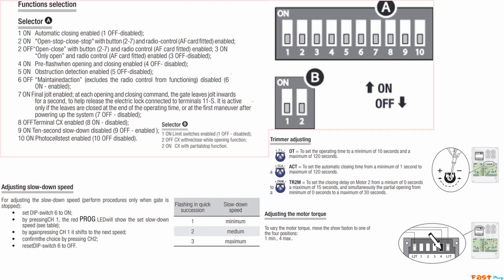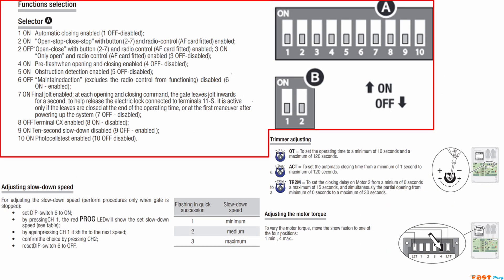Now, let's move on to the dip switches. On the strip with 10 switches, set 2, 8, and 9 to on, and leave the rest on off.